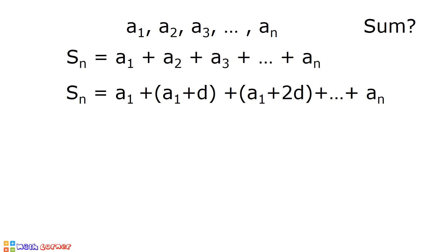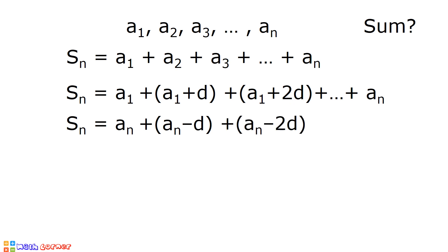If we rewrite our equation in reverse order starting from a sub n up to a sub 1, it becomes S sub n is equal to a sub n, plus the second to the last term which is a sub n minus the common difference, plus the third to the last term which is a sub n minus 2 times the common difference, all the way to the first term which is a sub 1.